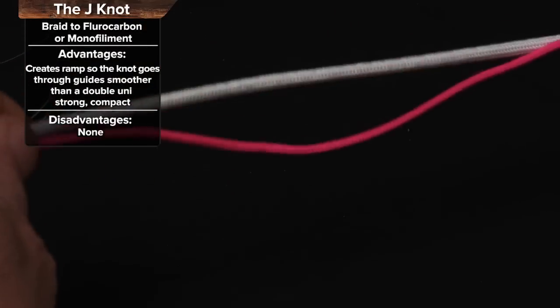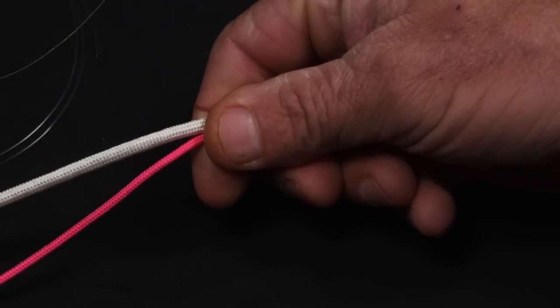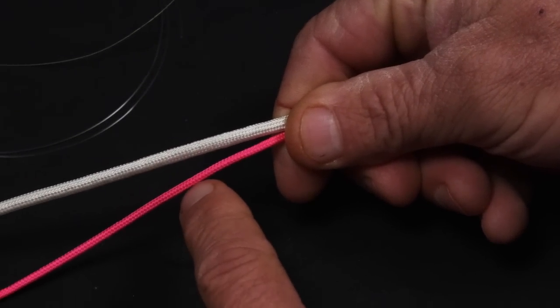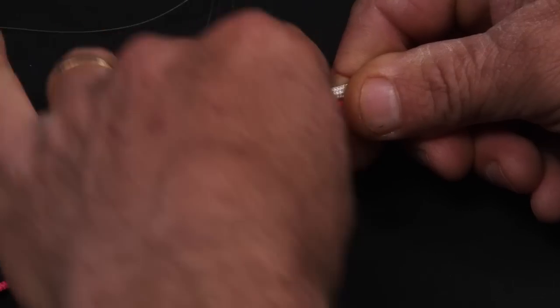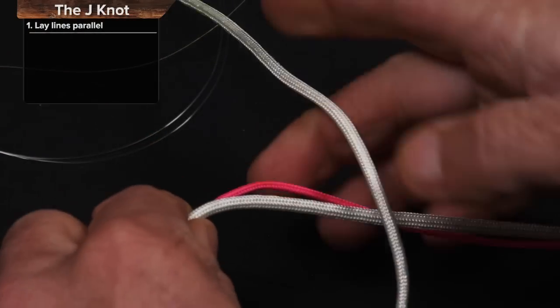It's going to be a uni knot on one side. So the white here is going to be, let's say, 30, 40 pound fluorocarbon. The pink is going to be 10 to 20 pound braid. I'll show you with this first, and then I'll show you with the actual line.